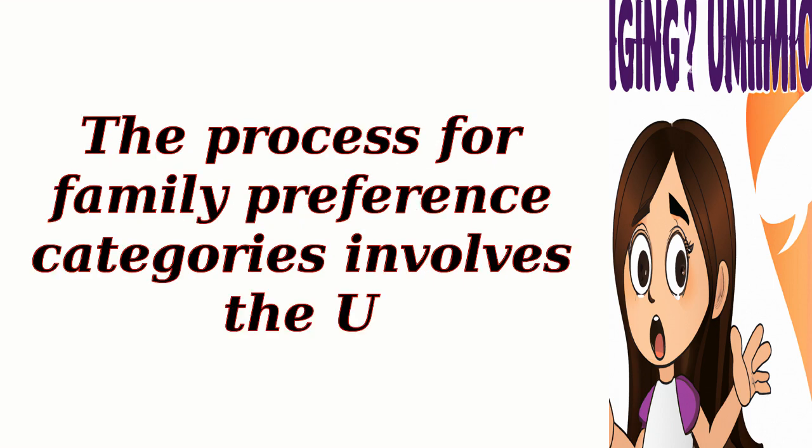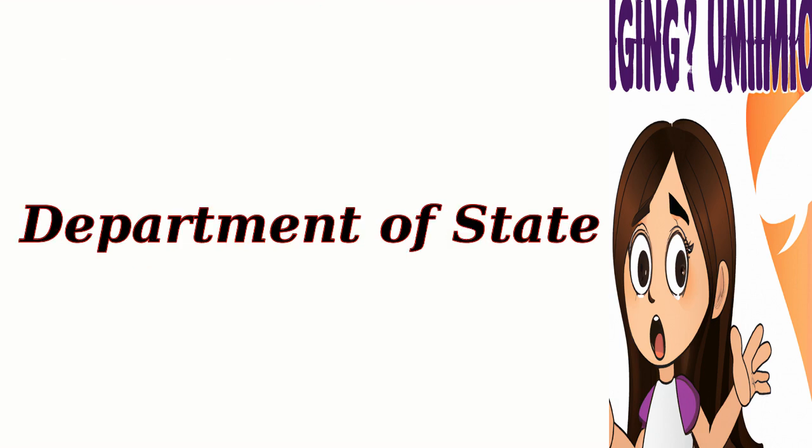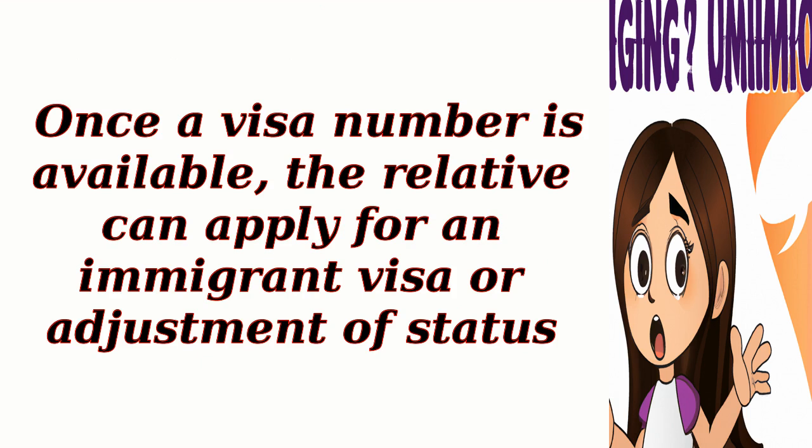The process for family preference categories involves the U.S. citizen or lawful permanent resident filing a petition for their relative, who then waits for a visa number to become available based on the visa bulletin published by the U.S. Department of State. Once a visa number is available, the relative can apply for an immigrant visa or adjustment of status.